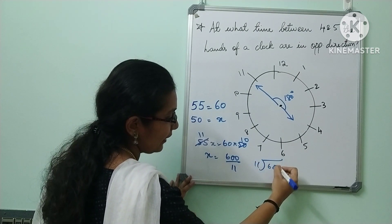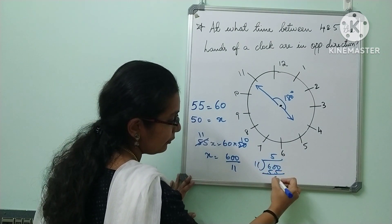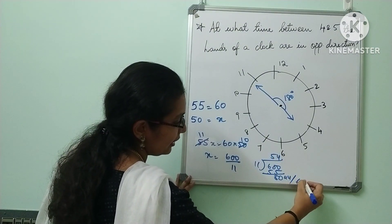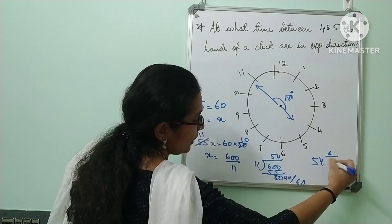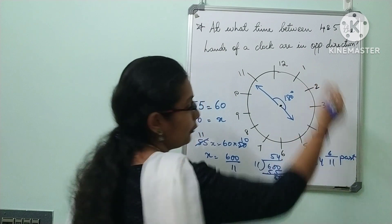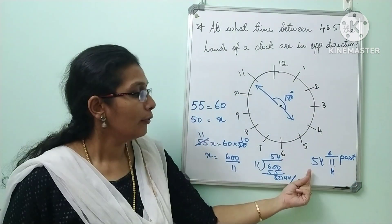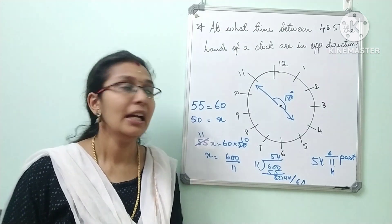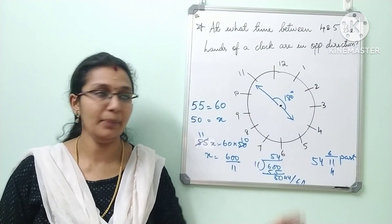Mix it as a fraction. 11 into 5 is 55, remaining 5. 11 into 4 is 44, remaining 6. So 54 and 6 by 11. Past end time: 4. So 54 and 6/11 minutes past 4 is the opposite direction. So this is the meaning.